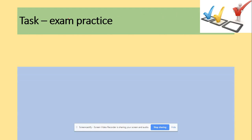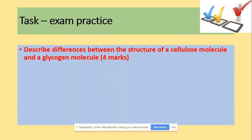We have one more question: describe the differences between the structure of cellulose and glycogen. This is a good question because they want a difference. Anytime they ask about difference, they're asking you to compare. Firstly, realize what they want — only structure, nothing else. When looking at differences, in one statement you talk about cellulose, then compare it against glycogen.